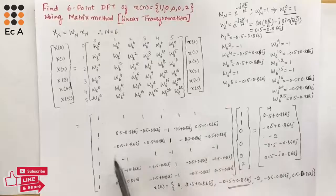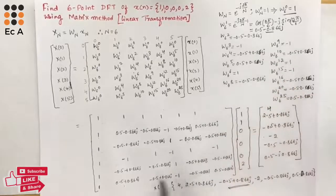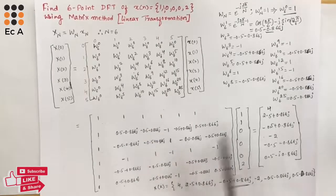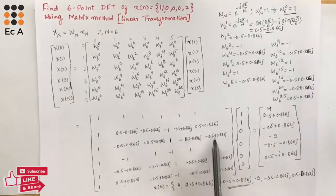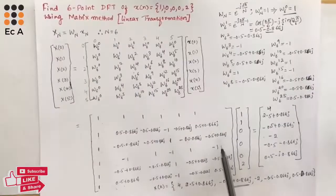This is the DFT for the given sequence. This is the standard matrix for the 6-point DFT. Even if you don't calculate these values, if you remember this matrix you can directly substitute; otherwise, you can use this calculation method to find each twiddle factor value. Hope you have understood the topic. Thank you.